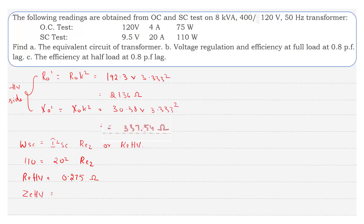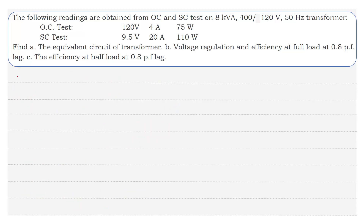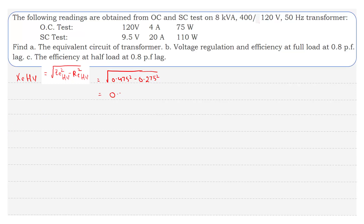The equivalent impedance referred to HV side is equal to Vsc divided by Isc, that is 9.5 divided by 20, equal to 0.475 ohms. Now we determine Xe with respect to the HV side, which equals the square root of Ze(HV)-squared minus Re(HV)-squared. Substituting the values, Xe with respect to HV side equals 0.3872 ohms.